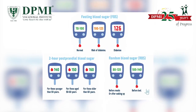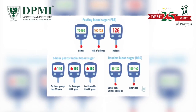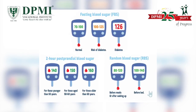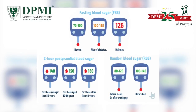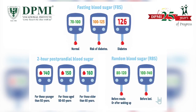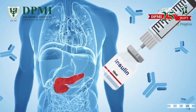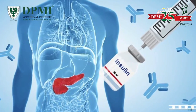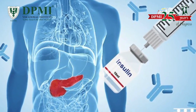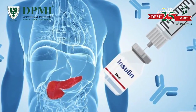The normal serum glucose level is 70 to 110 mg/dL in fasting, 110 to 140 mg/dL in random, and 80 to 140 mg/dL in post-prandial. High levels of serum glucose may be seen in diabetes mellitus, in patients receiving glucose-containing fluids intravenously, during severe stress, and in cerebrovascular accidents.